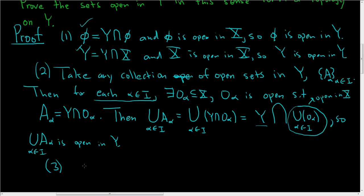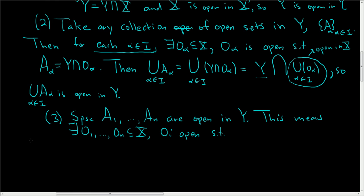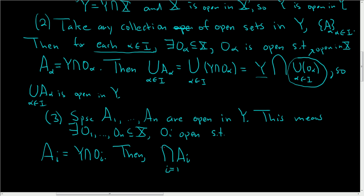The last condition is to show that any finite intersection of open sets of Y is also open in Y. Suppose A_1 through A_n are open in Y. This means there exist open sets O_1 through O_n, subsets of X, with each O_i open, such that each A_i equals Y intersected with O_i. Now we simply look at the intersection of the A_i's. The notation takes a little getting used to when you're working with topological spaces.